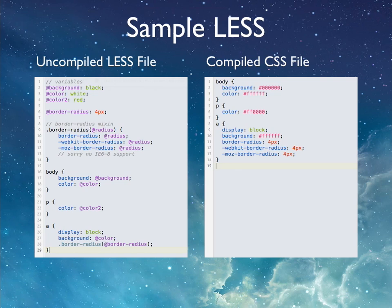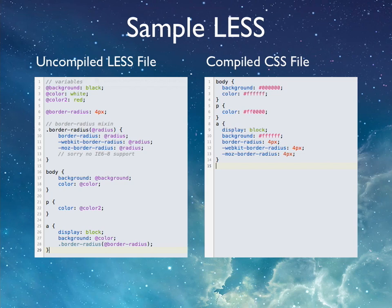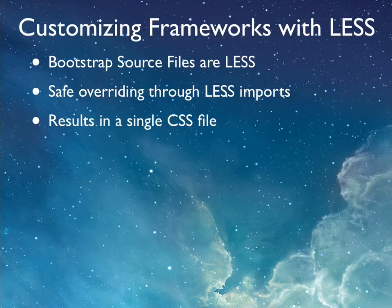That way, if there are any changes in how they do border-radius, you just make that change in one place and it works through the rest of your site. You can also minify it with your compiler. This is unminified just so you can read it. You can also import separate files — you don't have to keep all of this in one file. You can keep it separate and import it all into a single file, which reduces the number of requests on the server.